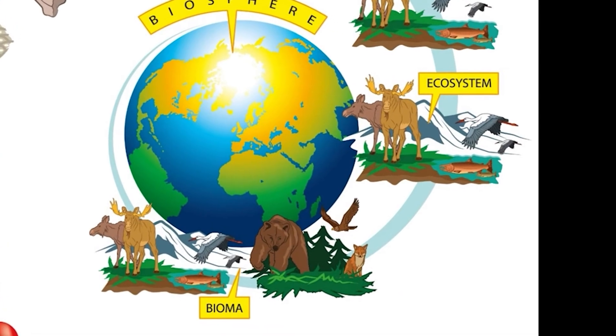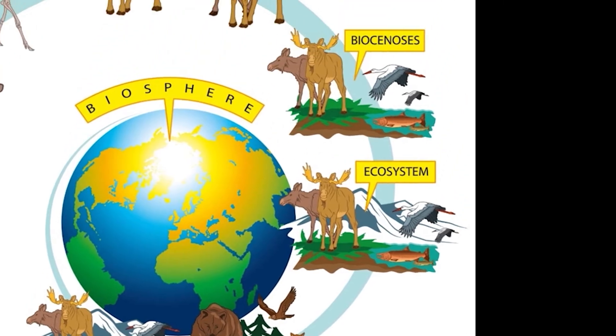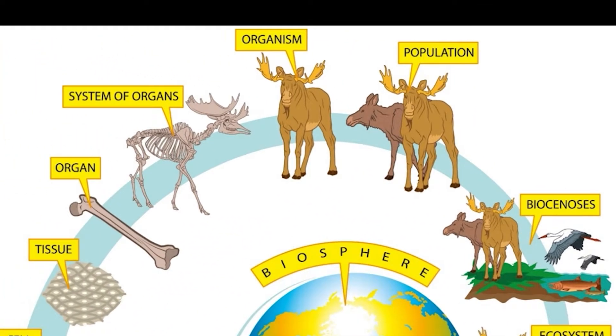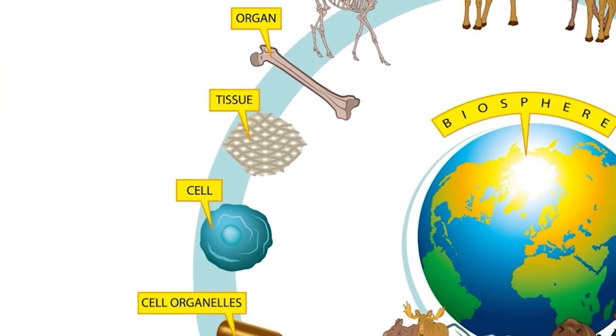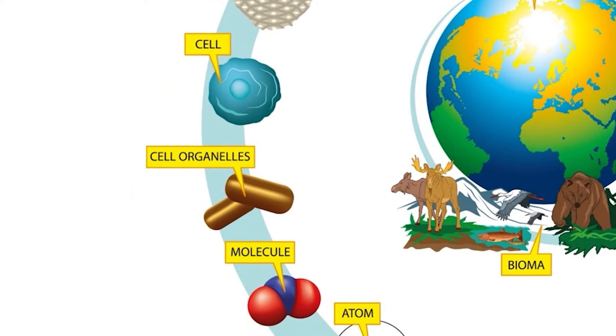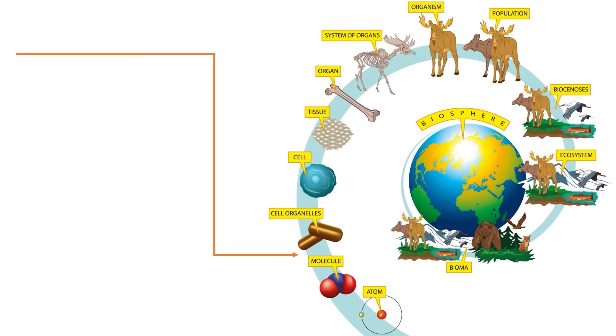To understand how individual atoms eventually form the entire biological hierarchy, we need to make a quick pit stop between molecules and organelles. Some of the most important things in biology happen at this level, right between individual molecules and organelles.